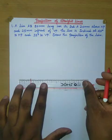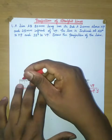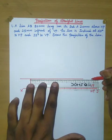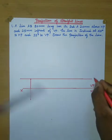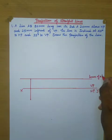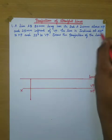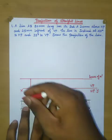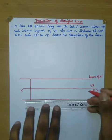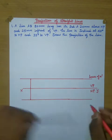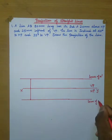Draw a line parallel to the reference line, then draw a perpendicular line. This line is going to be the locus of A'. This is the front view, and the front view is above HP. Again, 25mm in front of VP, draw a perpendicular line. This line is going to be the locus of A.